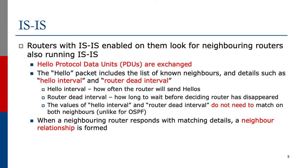The router dead interval is how long to wait before deciding the neighboring router has disappeared. The router dead interval is usually a multiple of the hello interval, so maybe three times the hello interval — in other words, three hellos have been missed — and that allows IS-IS to determine if the neighbor has disappeared. The values of hello interval and router dead interval do not need to match on both neighbors, unlike in the case for OSPF.